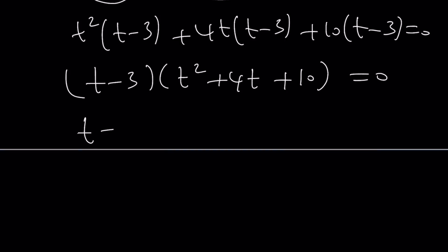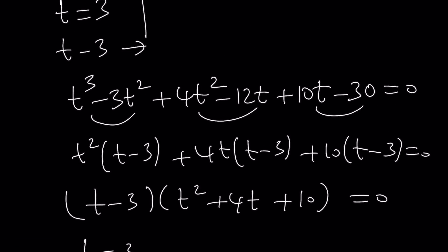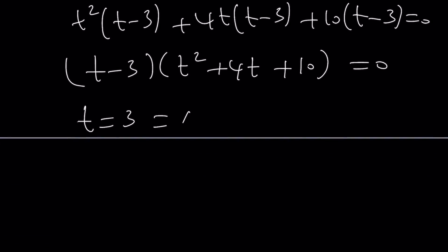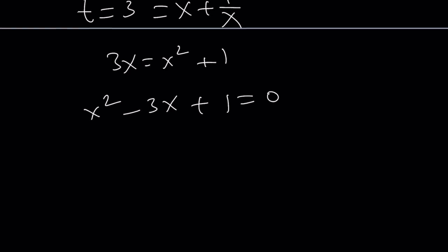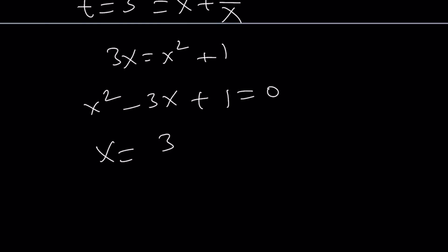t equals 3 is going to give us what? What is t? t is x plus 1 over x, right? So if you set this equal to 3, you should get real solutions. Multiply everything by x. 3x equals x squared plus 1. Or x squared minus 3x plus 1 equals 0. And this should give you x equals 3 plus minus root 5 over 2. So those should be good, right? And then what about the other ones?